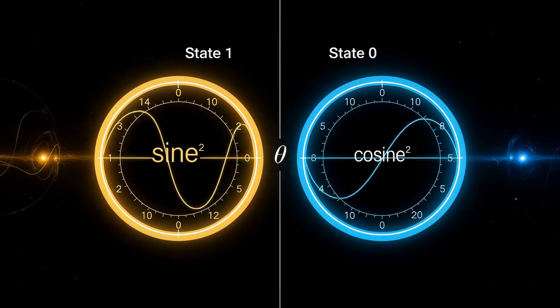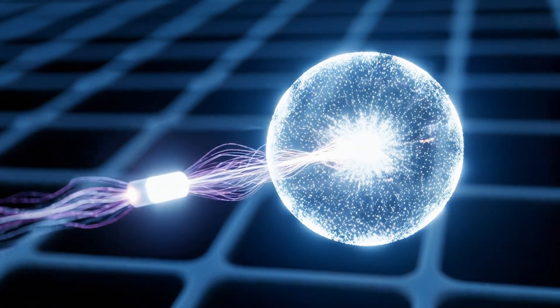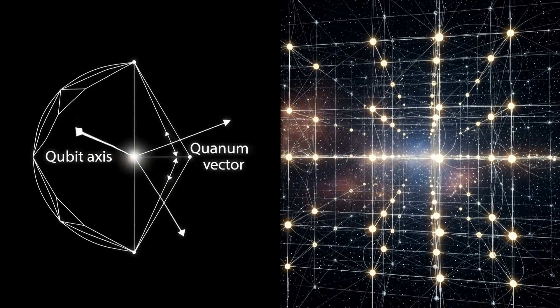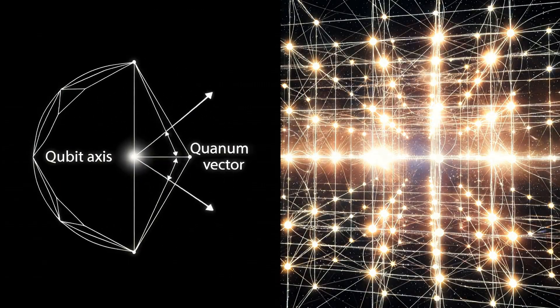The probability that a qubit detects a 1 is the sine squared of the angle between the quantum vector and the qubit axis divided by 2. The probability it detects a 0 is the cosine squared of that same angle divided by 2.